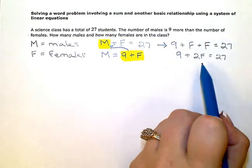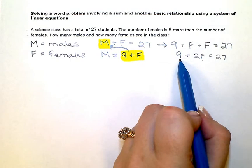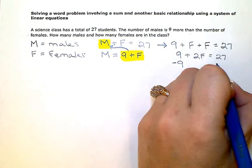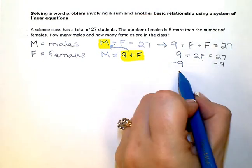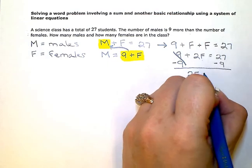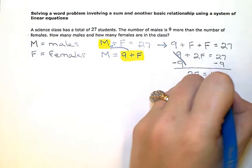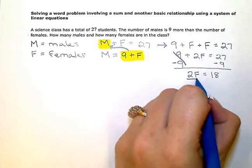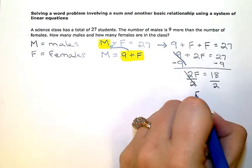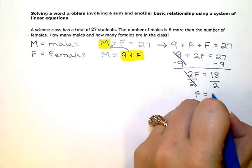Trying to get my F by itself, I'm going to zero this constant term out, or subtract nine from both sides. After I simplify, I'll be left with two F is equal to 18. Then divide both sides by two, and F is equal to nine.